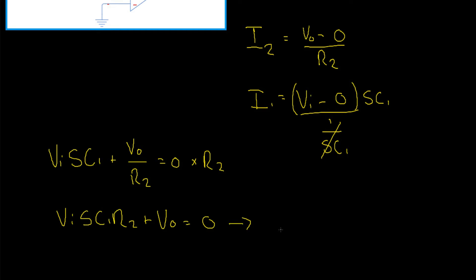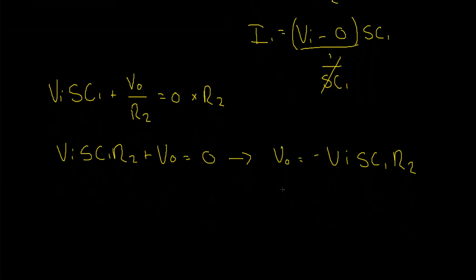Now, we can subtract VI SC1 R2 to the other side, which gives VO equals negative VI SC1 R2. And then, finally, we can divide through by VI, giving us VO divided by VI equals negative SC1 R2. And that's our final result.